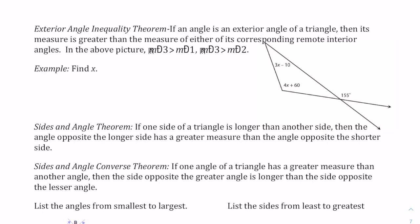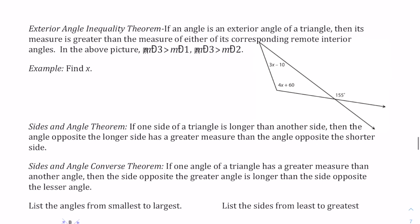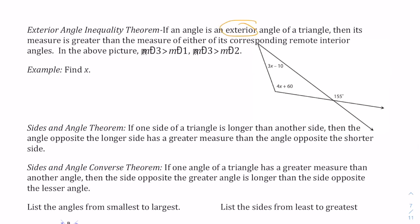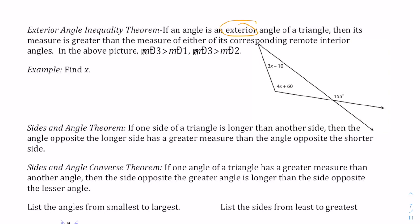We also have the exterior angle inequality theorem. If an angle is an exterior angle, then its measure is greater than the measure of either of its corresponding remote interior angles. Both of those interior angles are smaller than the exterior angle because those two add up to 155, so both individually must be less than 155.